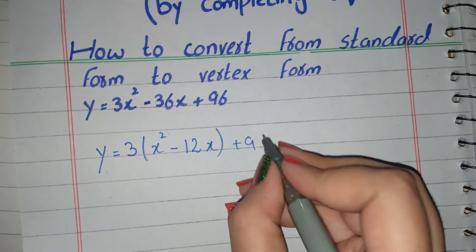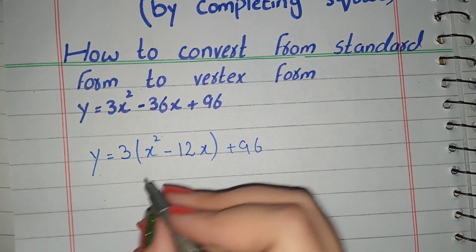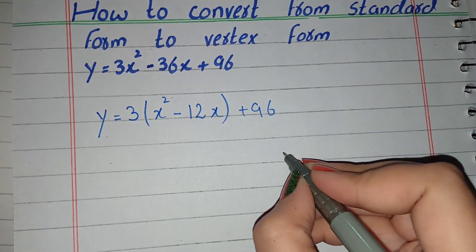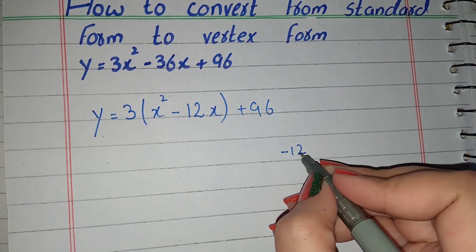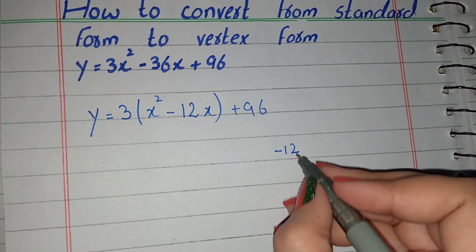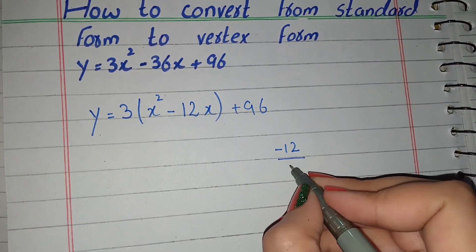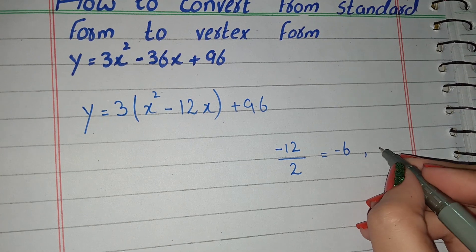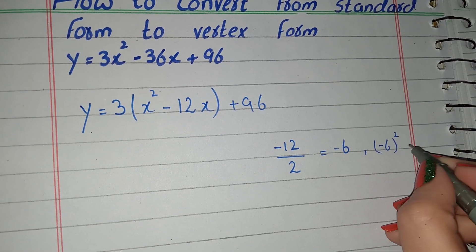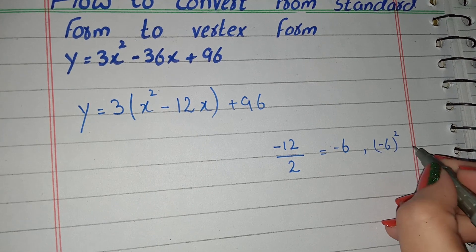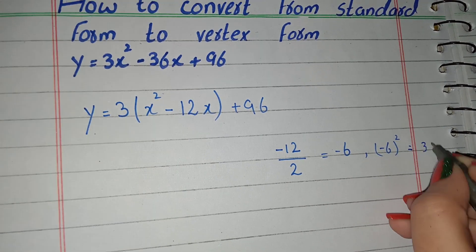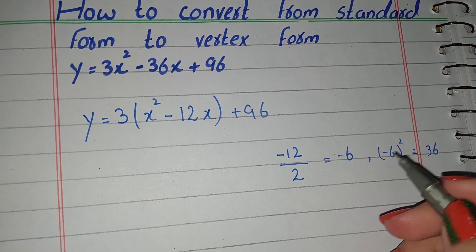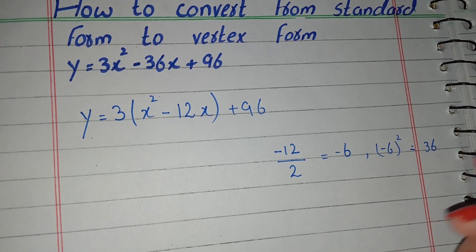The next step is to write the coefficient of x. The coefficient of x is negative 12. We write negative 12, divide it by 2 to get negative 6, and then square it. The square of negative 6 equals positive 36.